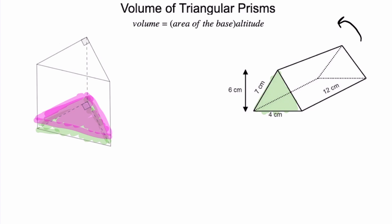When you use this equation, volume equals the area of the base times altitude, you're going to find in this case that triangle is going to be the base. Remember, triangle is base times height divided by 2, and then that whole thing will be times the altitude.